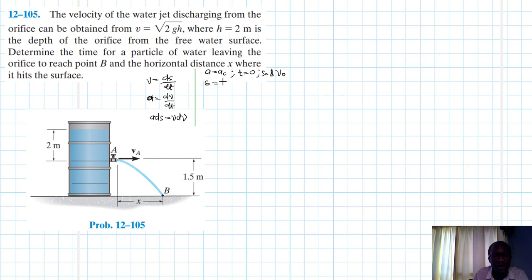The equations are s is equal to s naught plus v naught t plus half ac t squared. Then we have v is equal to v naught plus ac t.